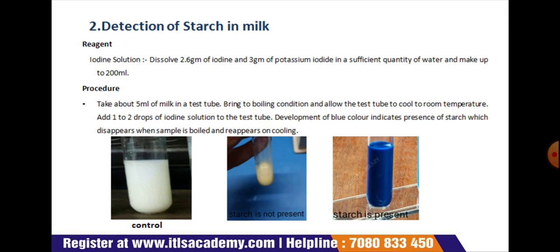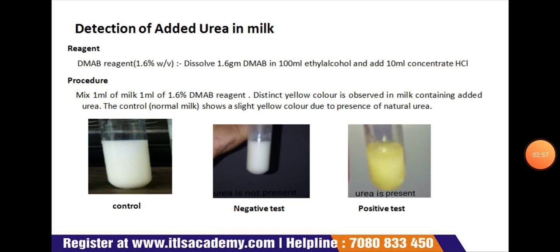In the procedure, take about 5 ml of milk in a test tube, bring to boiling condition, and allow the test tube to cool to room temperature. Now add 1 to 2 drops of iodine solution. Development of blue color indicates the presence of starch, and the milk is said to be adulterated. The color disappears when the sample is boiled and reappears on cooling. If starch is not present, the sample shows a light pale color, but appearance of blue color strictly indicates the presence of starch.